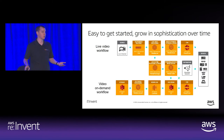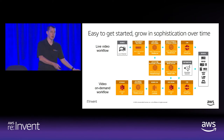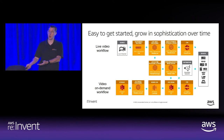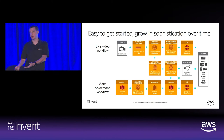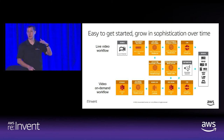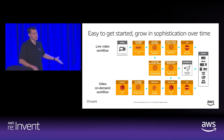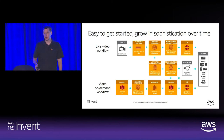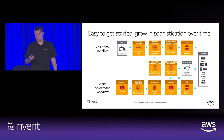We can't forget about the on-demand workflow. Typically if you have a lot of live content that's interesting to people, you also have some on-demand content — video that's not happening now, maybe the live events from the previous month — that you want to make available in catalog form. The media services accomplish that as well. Simple to get started, but easy to grow in sophistication over time.